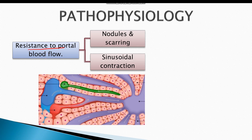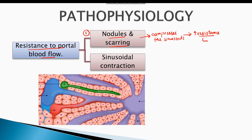The primary cause of portal hypertension in liver cirrhosis is resistance to portal blood flow. One reason for this resistance is the formation of nodules and fibrosis resulting in scarring. The nodular and scarred texture of the liver compresses the sinusoids, resulting in increased resistance, which ultimately leads to pooling of blood in the portal veins.